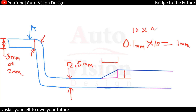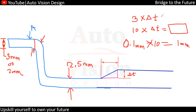The formula is 10x delta-T, where delta-T is the thickness variation, and that gives the value for the transition length. There is another condition some people follow: 3x delta-T. So if delta-T is 0.1mm, we get 0.3mm of transition length.